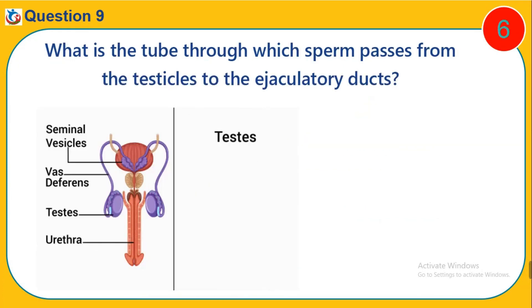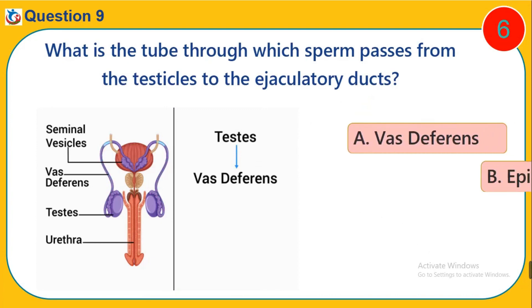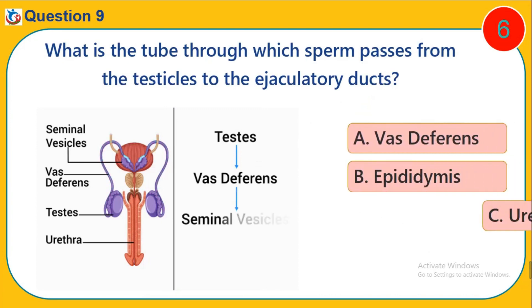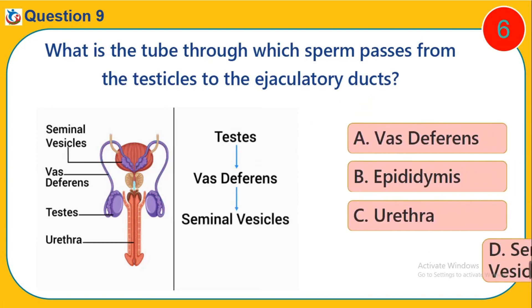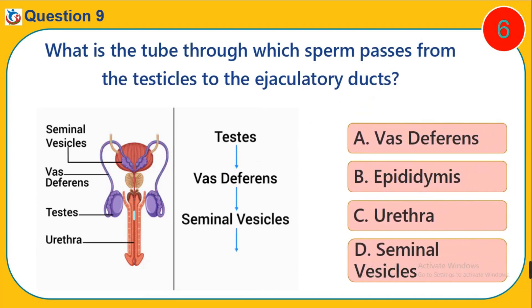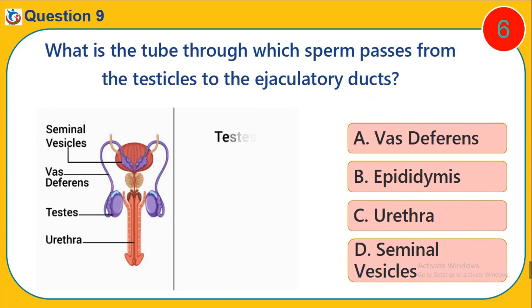Question 9. What is the tube through which sperm passes from the testicles to the ejaculatory ducts? A. Vas deferens. B. Epididymis. C. Urethra. D. Seminal vesicles.